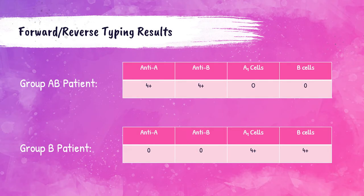Group AB patients should have a 4-plus reaction with both anti-A and anti-B antisera, because they have both A and B antigens on their red blood cells. Group AB patients should have a negative reaction with A1 and B cells because they should not have any anti-A or anti-B antibodies in their serum. Group O patients should have negative reactions with both anti-A and anti-B antisera, and 4-plus reactions with both A1 and B cells, because they have anti-A and anti-B antibodies but no A or B antigens.